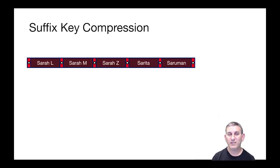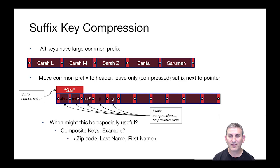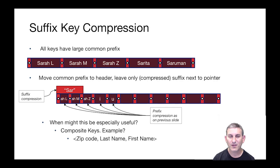Here's another compression technique called suffix key compression. What we saw up to now was prefix key compression; now this is suffix key compression. Here's our example interior node, and you'll notice they all start with the same few characters. What we can do is move those characters to a header and store only the suffixes of that header as split keys. We have SAR as a common header and then different suffixes as our split keys. During comparisons, we'll reconstruct the full key by pasting the prefix onto the suffix — this allows us to not store the same SAR prefix over and over.